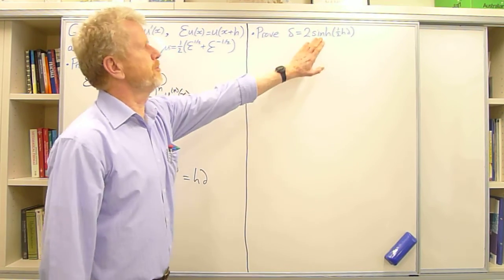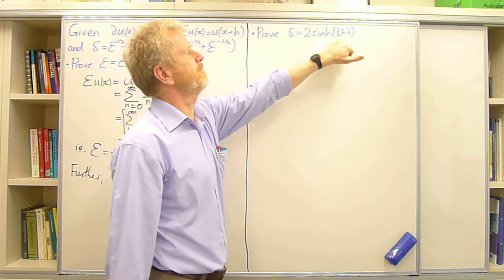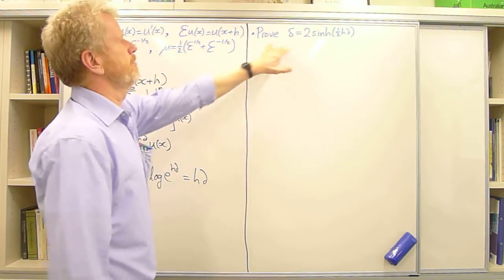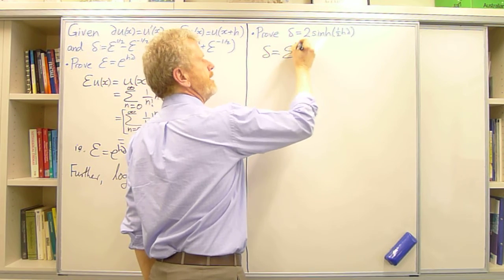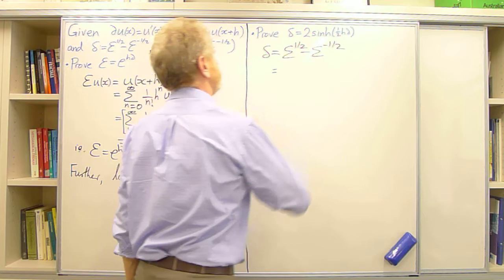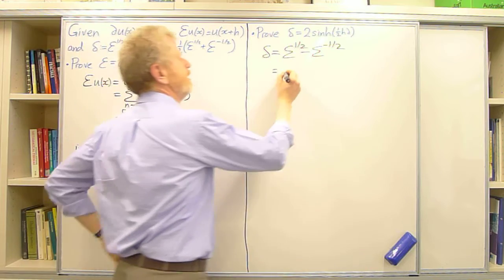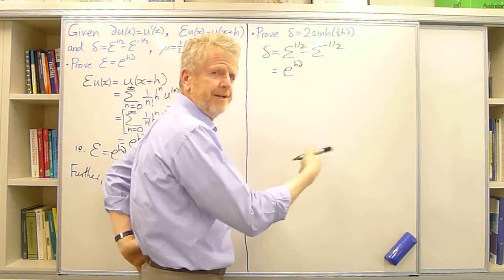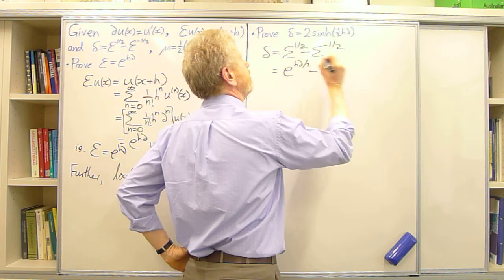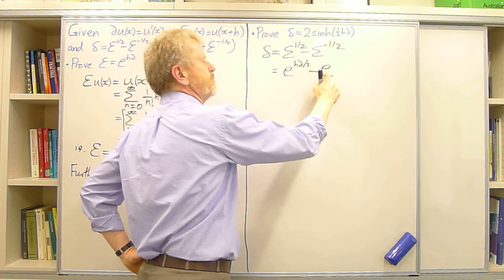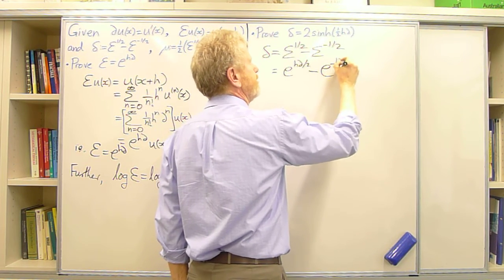Another identity useful in discretisations is that the centre difference operator delta equals 2 sinh(hD/2). From definition, delta is E^(1/2) minus E^(-1/2). Since E equals e^(hD), E^(1/2) is e^(hD/2), and E^(-1/2) is e^(-hD/2). So delta equals e^(hD/2) minus e^(-hD/2).